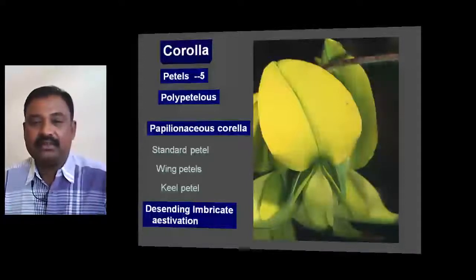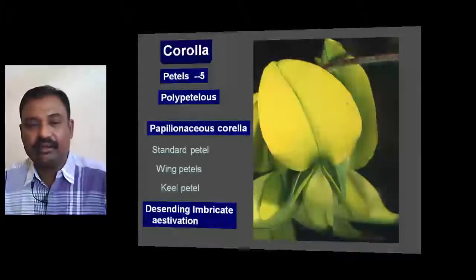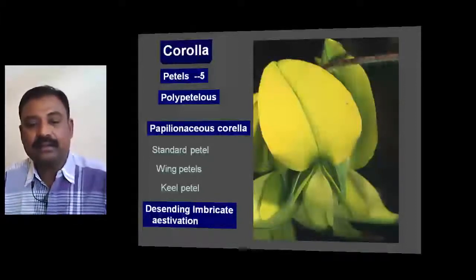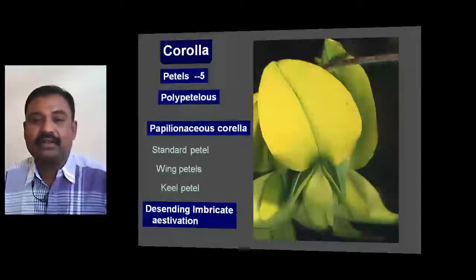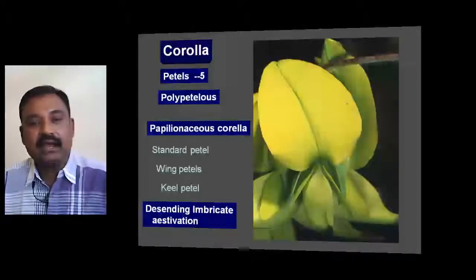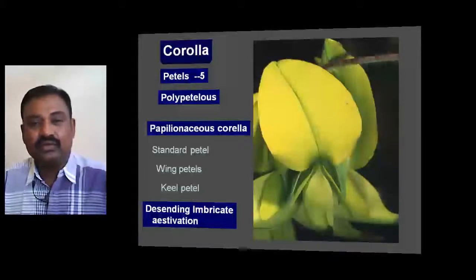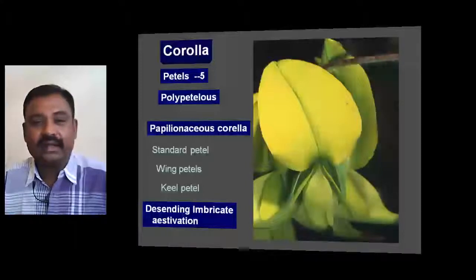In Papilionaceous corolla, one large petal is present at the posterior side. This large petal is called the standard petal or vexillum. It is very large in size and useful for attracting insects.